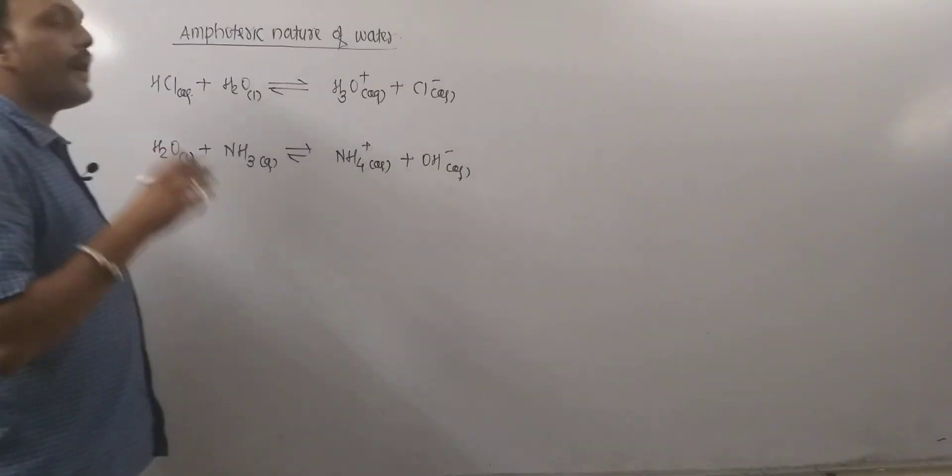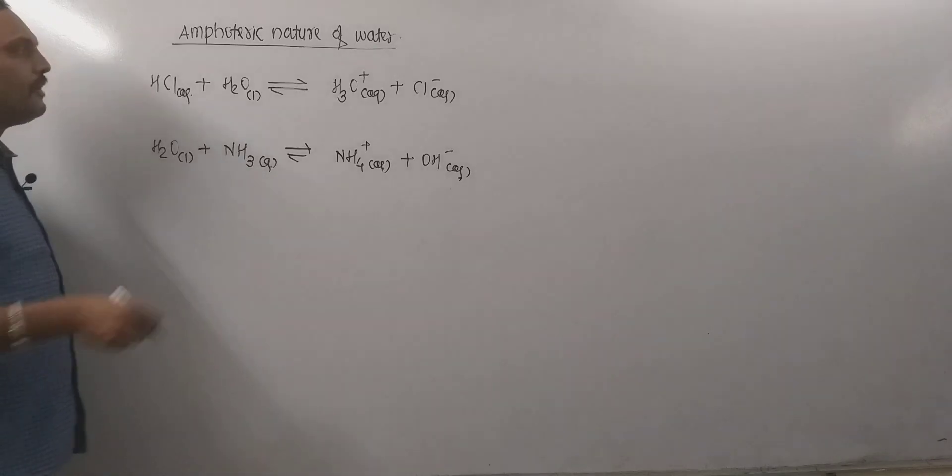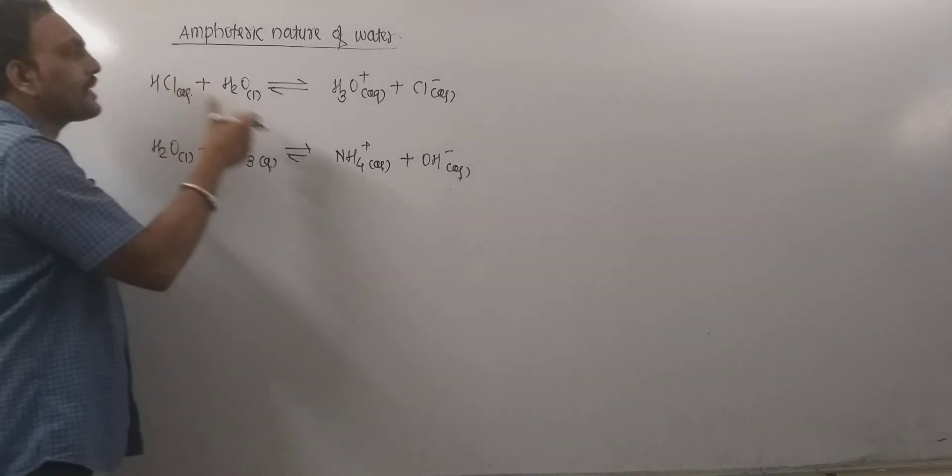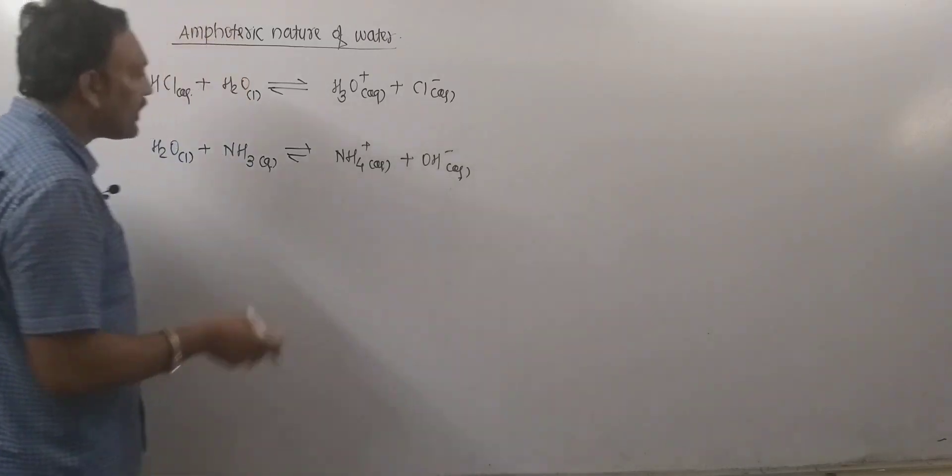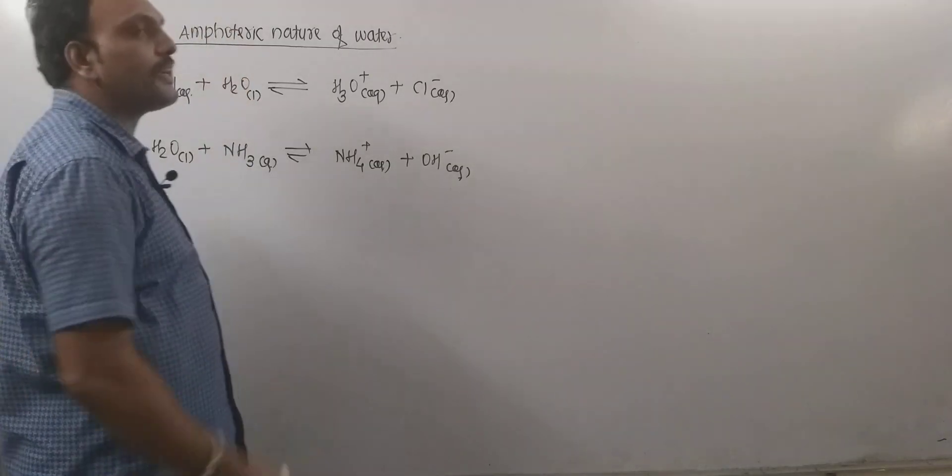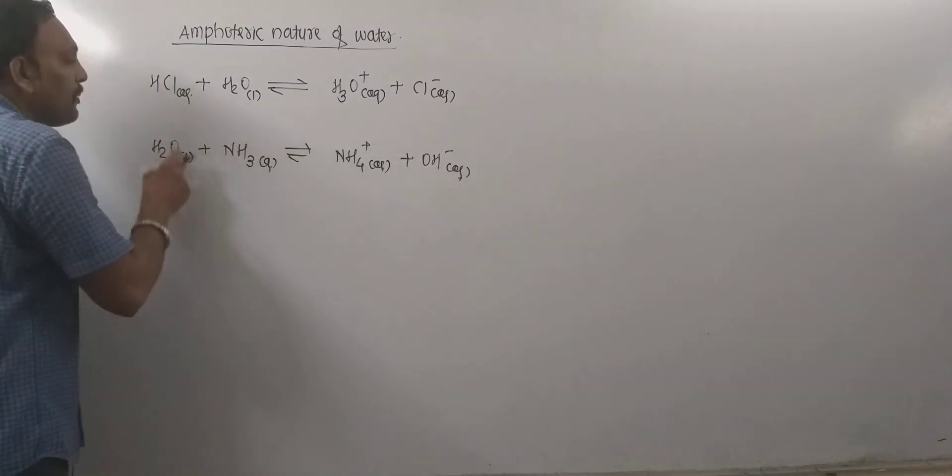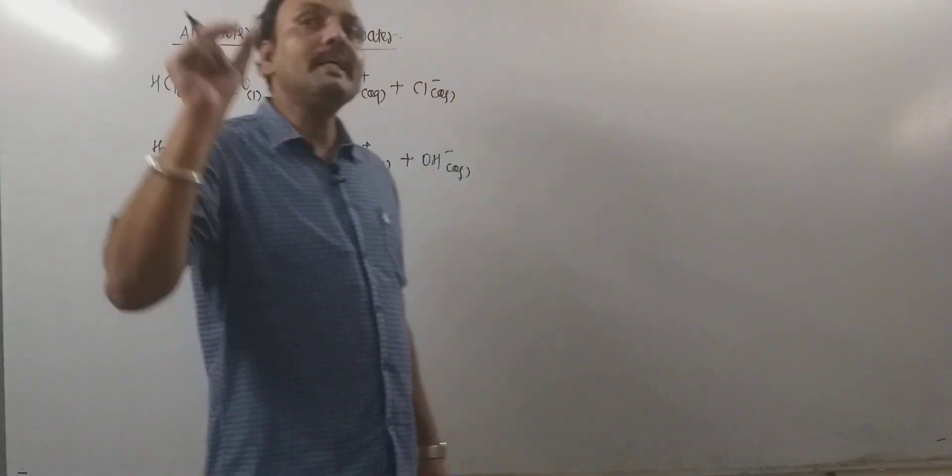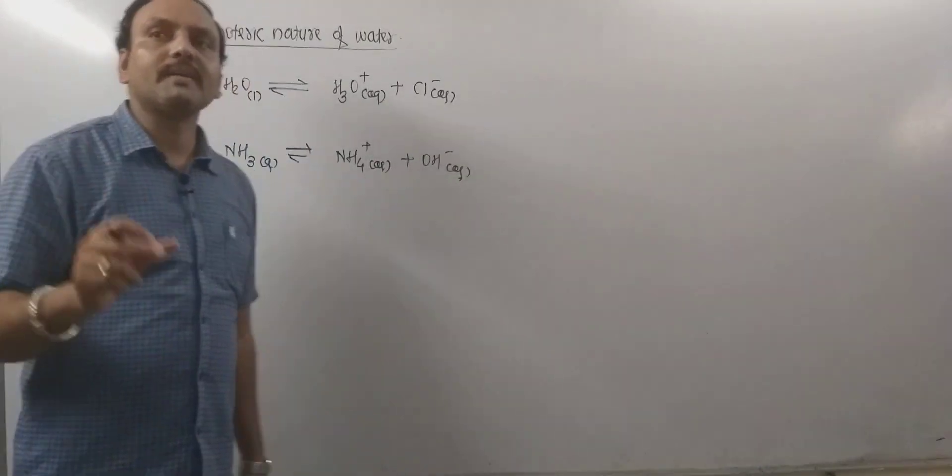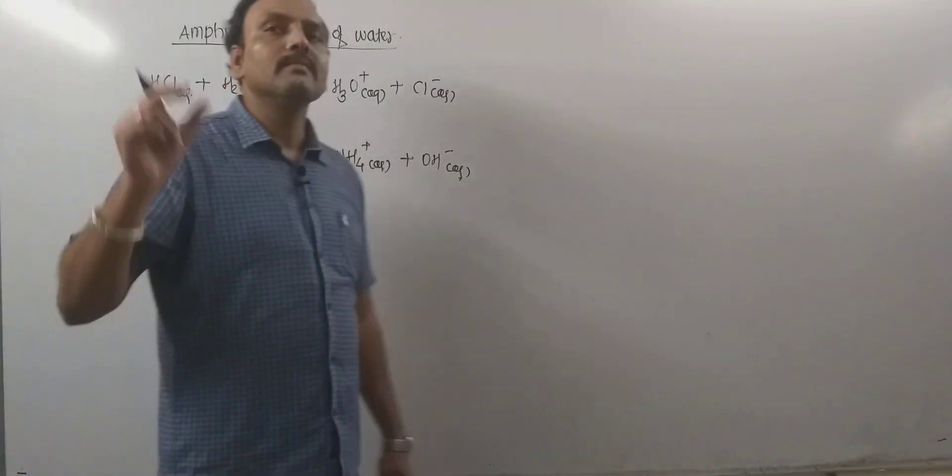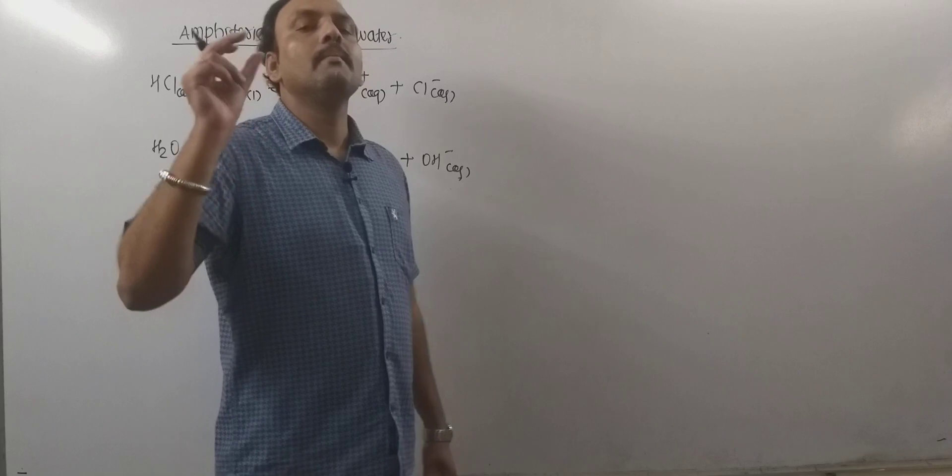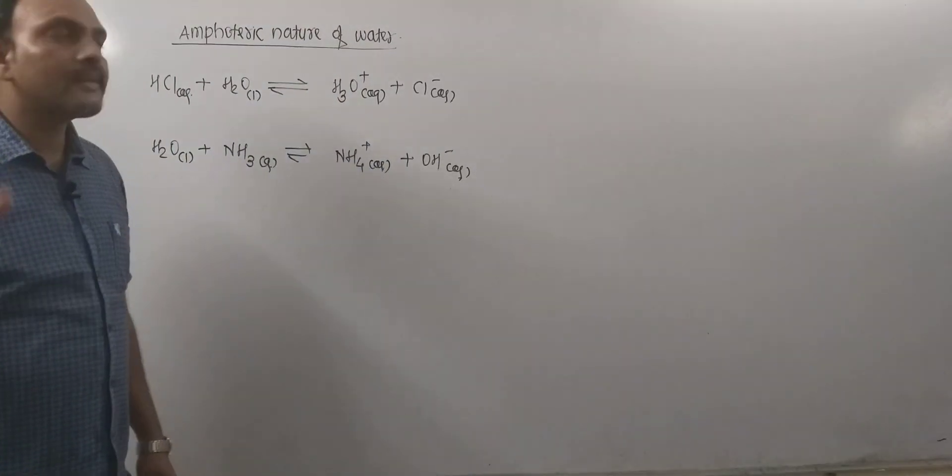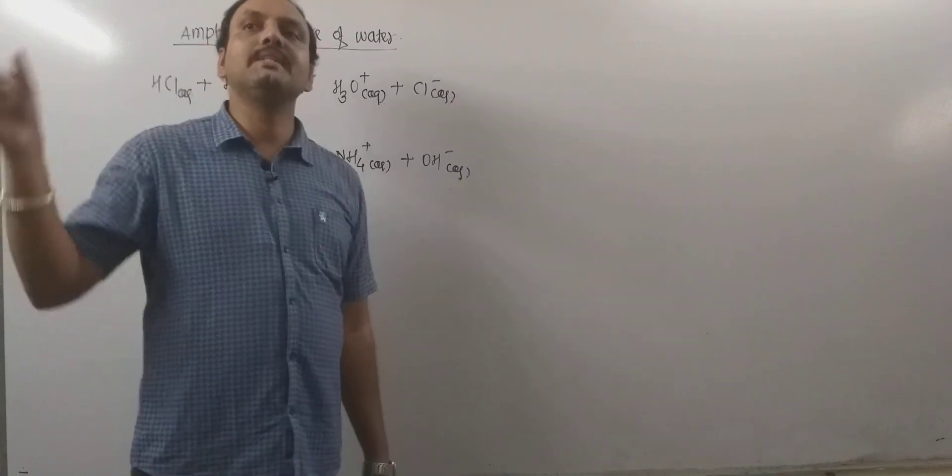Thus, according to Bronsted-Lowry theory, in the first case, water accepts proton and acts as a base. But in the latter case, that is the second case, water donates proton to ammonia and acts as acid. What does it mean? It means that water can donate as well as accept proton. Thus, it can act acidic as well as basic.